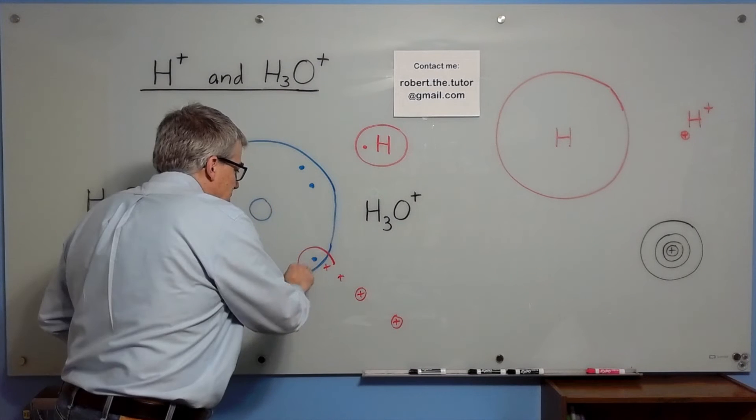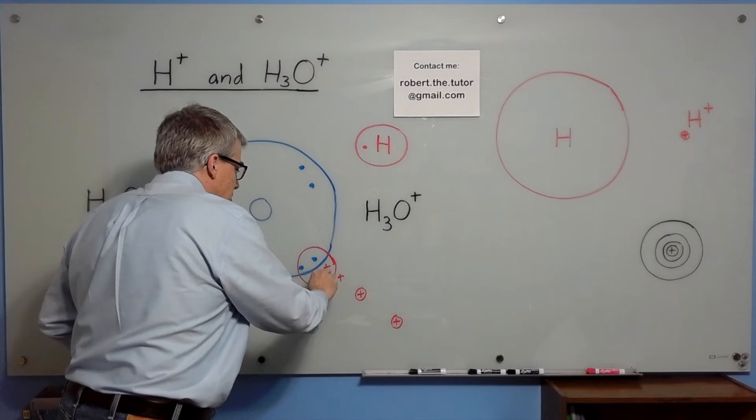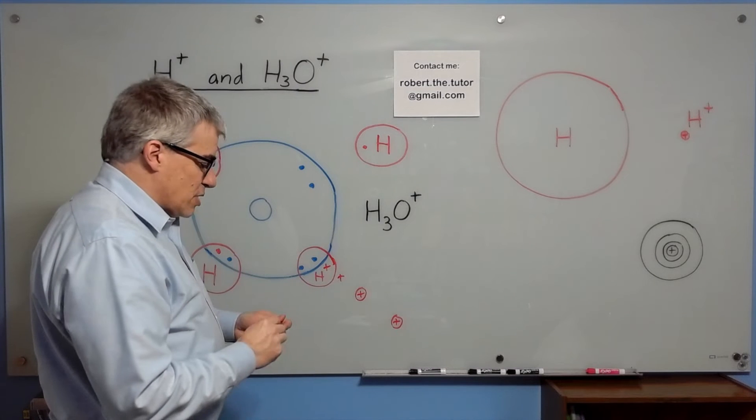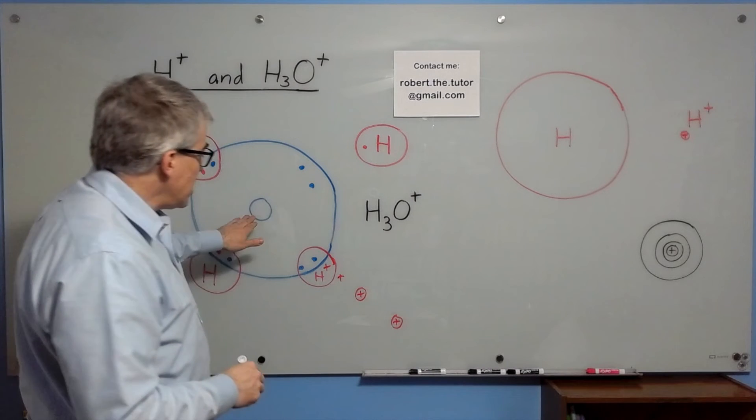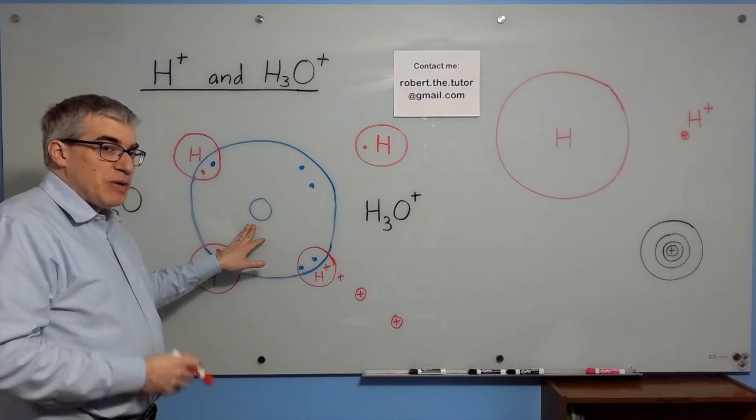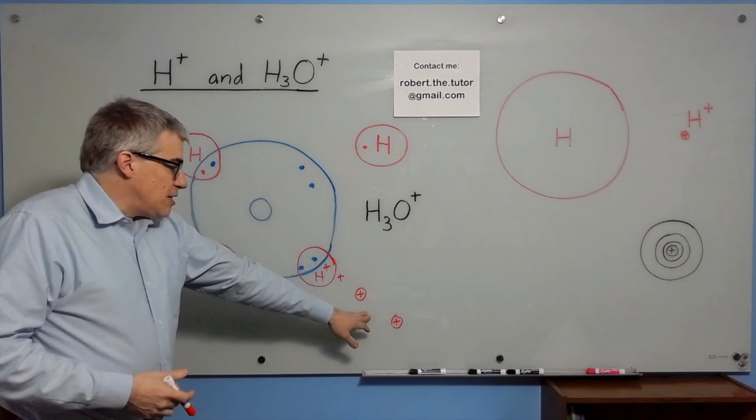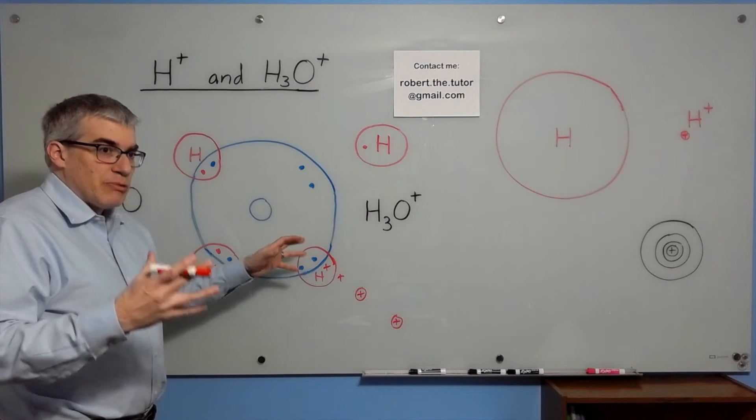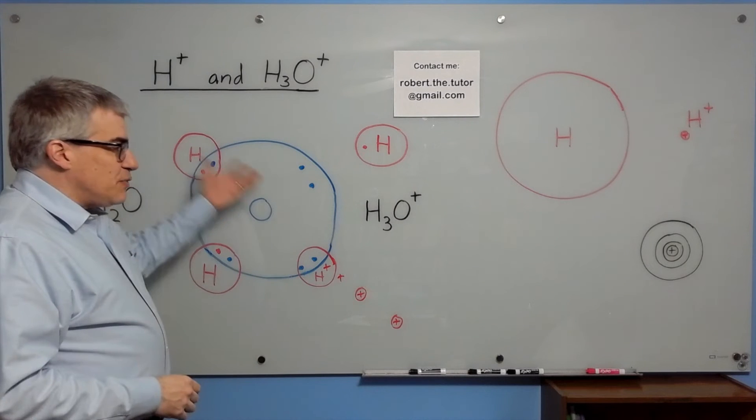You end up with another hydrogen attached where both of the electrons were contributed by the oxygen. So the oxygen is now putting up with being positive because the bare proton was so irresistible because its field was so strong.